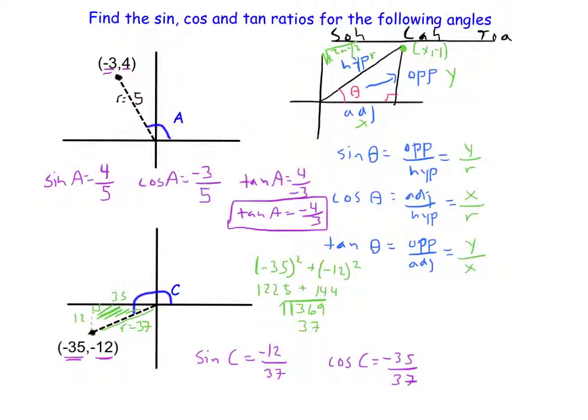On to tangent. Tangent is TOA, opposite over adjacent. Opposite is vertical, so it's going to be negative 12, that's the Y, over adjacent, that's the X, negative 35. And these negative signs can cancel out, and I'm just going to get 12 over 35.